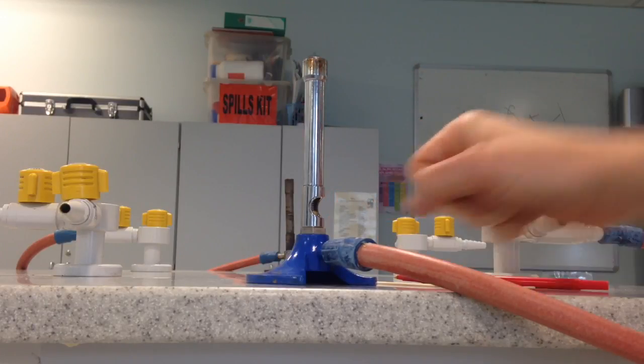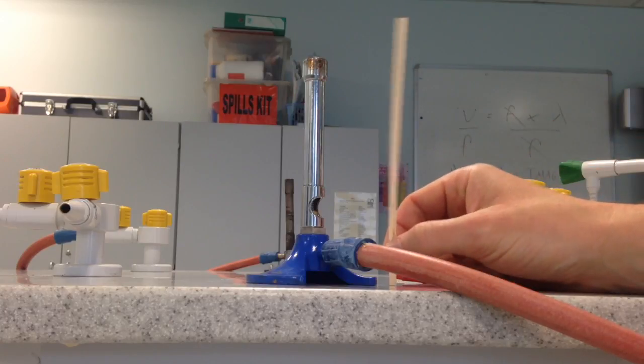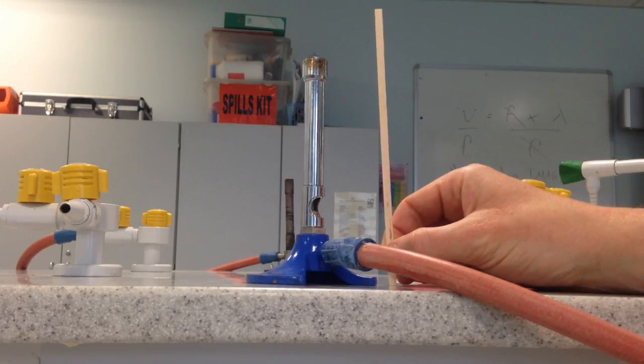When you are lighting the Bunsen burner, you will be using thin pieces of wood that are called splints.